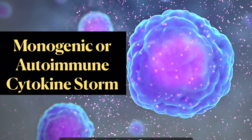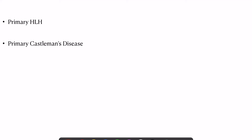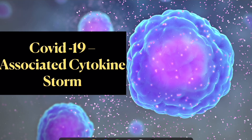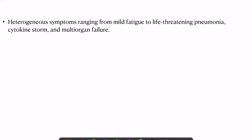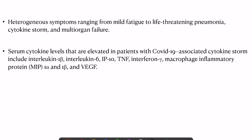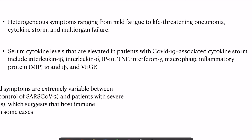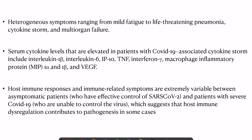Monogenic or autoimmune cytokine storm is seen in primary HLH or multicentric idiopathic Castleman disease, where IL-6 levels are elevated without any pathogen present. Regarding COVID-19, it presents with very heterogeneous symptoms from mild fatigue to life-threatening ARDS and multi-organ failure. Elevated serum cytokines in COVID-19 include IL-1-beta, IL-6, IP-10, TNF, interferon-gamma, macrophage inflammatory proteins 1-alpha and 1-beta, and vascular endothelial growth factors. Variable host immune responses between asymptomatic and severe cases suggest immune dysregulation contributes significantly to COVID-19 pathology.